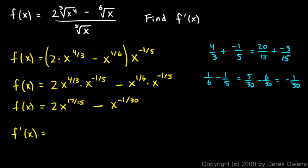f prime of x is going to be 2. My constant multiplier stays out front. Then times 17 fifteenths, this exponent just comes out front as a multiplier here, times x to the power of this minus 1. And 17 fifteenths minus 1 is just 2 fifteenths. So it's 2 fifteenths there.